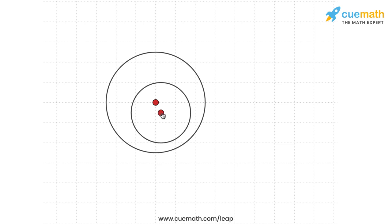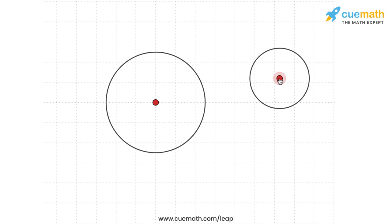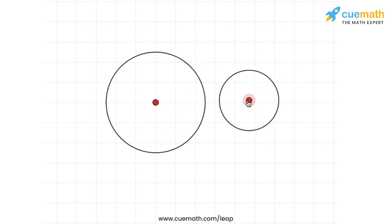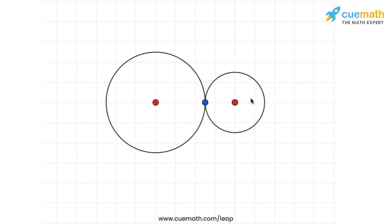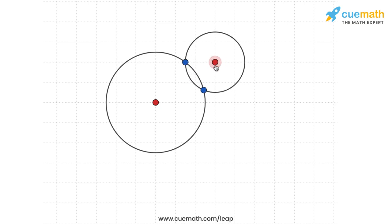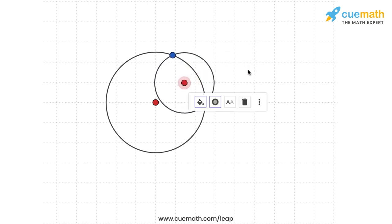So there are three possibilities in terms of common points. The two circles could have no common points — this happens if they lie completely outside each other, or one circle lies completely inside the other. There could be one common point if the two circles touch each other, either externally or one touching the other from the inside. Finally, if the two circles intersect each other, we have two common points. So the maximum number of common points two circles can have is two.